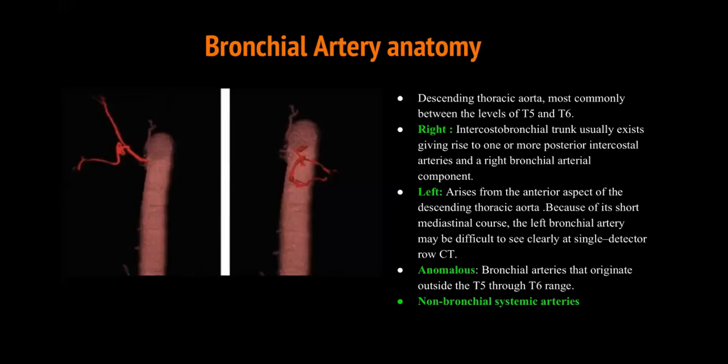You have to report: are there any anomalous bronchial arteries arising outside the T5-T6 level, and are there any non-bronchial systemic arteries? How do you identify them? Bronchial arteries will course along the bronchi, as the name suggests. Non-bronchial systemic arteries will directly supply the lung parenchyma without going through the bronchial route — for example, at the lung base you may see vessels going via the cardiophrenic angles into the lung bases rather than along the bronchi.